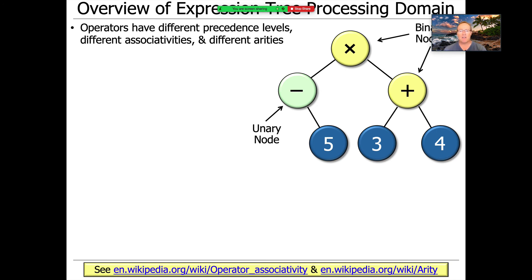So they would be like the value three or the value five or the value four or whatever. Operators can have different precedence levels, different associativities, and different arities. You're probably familiar with the concept of precedence and associativity because you hopefully learned that in elementary school. Arity is something that you may not be familiar with the term, but I guarantee you understand the concept.